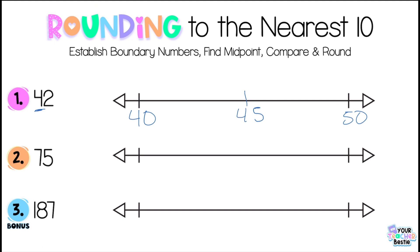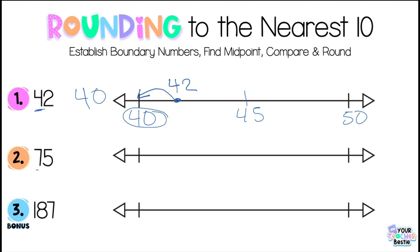Now that we've found the midpoint, we're going to compare our number with the midpoint and round. 42 is less than 45, so we're actually going to round down to 40. Now we're going to do example number two. For example number two, we have the number 75. We're going to follow the same three steps. The first step is to underline the tens place and establish the boundary numbers, which in this case is 70 and 80.